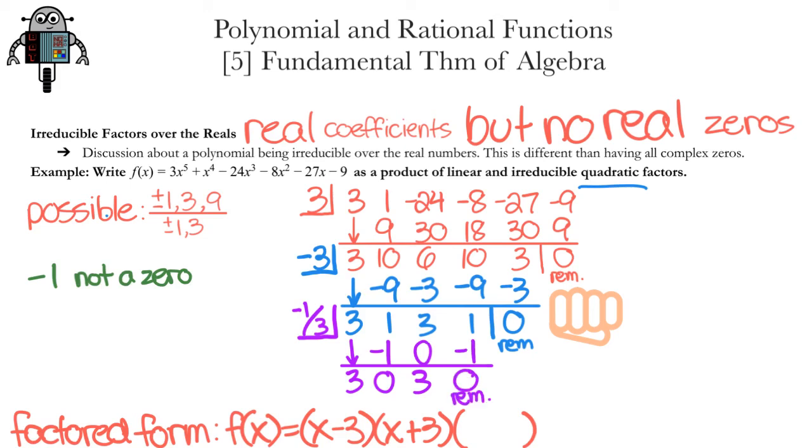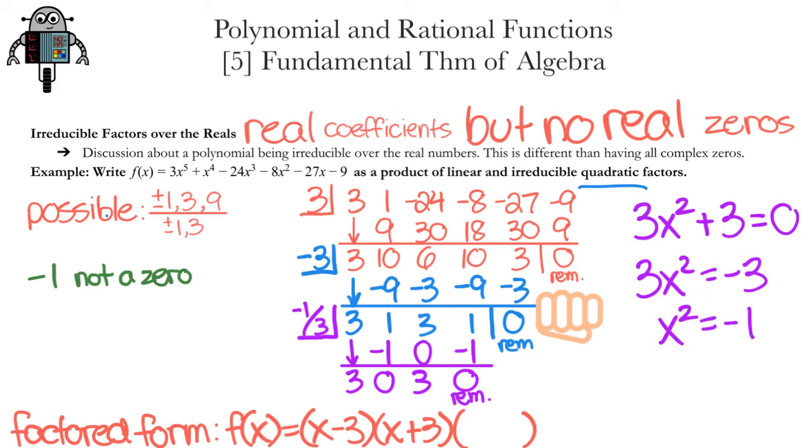That last factor can be written as 3x² + 3. Look, the coefficients are real, but this expression doesn't have any real zeros. Subtracting 3 and dividing by 3 results in having to take the square root of a negative number, which is not real. Thus, f(x) could be written as (x - 3)(x + 3)(x + 1/3)(3x² + 3). We have three linear factors and one irreducible quadratic factor.